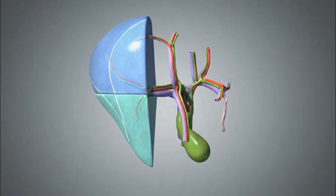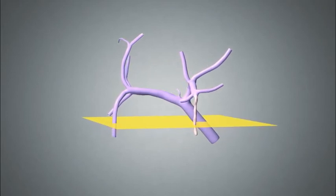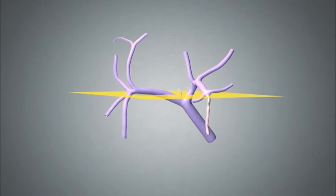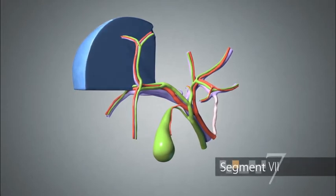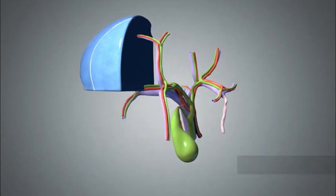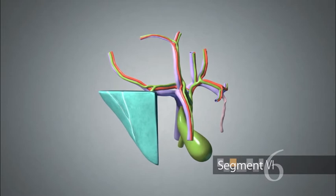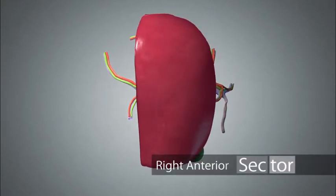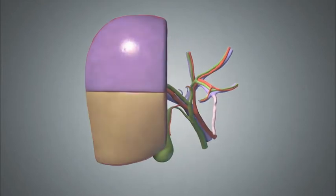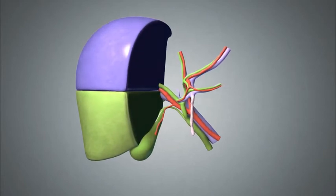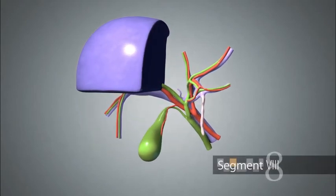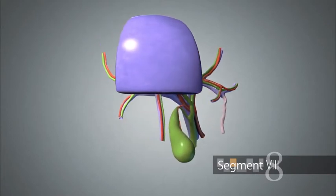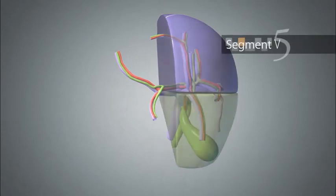The right posterior pedicle has two main branches that supply each of these segments. When viewing a cross-sectional image, the segments can be differentiated by the level of the portal vein bifurcation. The parenchyma cephalad to the level of the portal vein bifurcation is termed segment 7, and the area caudal to this bifurcation is segment 6. The right anterior pedicle supplies the right anterior sector, which includes segments 5 and 8. Similarly, the parenchyma cephalad to the portal vein bifurcation is segment 8, and the area caudad is segment 5.